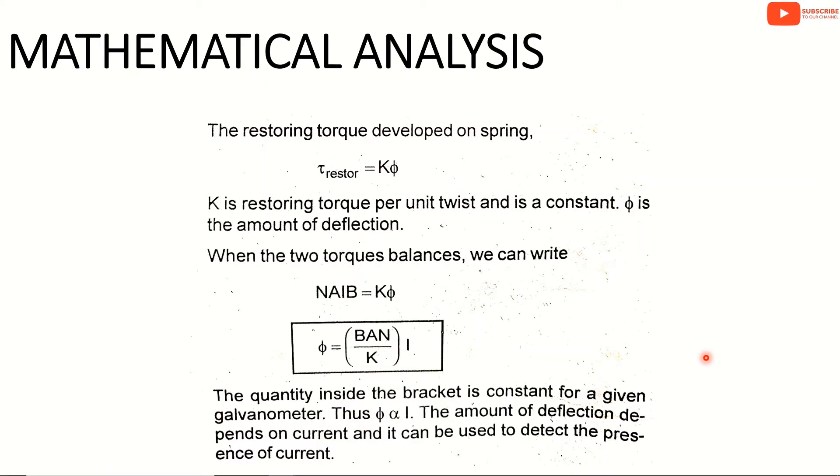The magnetic field is radial. That is, the angle between the area vector and B is 90 degrees. Therefore, φ is equal to NAB divided by K into I.